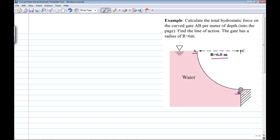The water is on the left and on the right we have air. You can see the free surface up here, and what we're asked to do is calculate the total hydrostatic force on the gate per meter of depth into the page and find the line of action for a gate that has a radius of curvature of 6 meters.